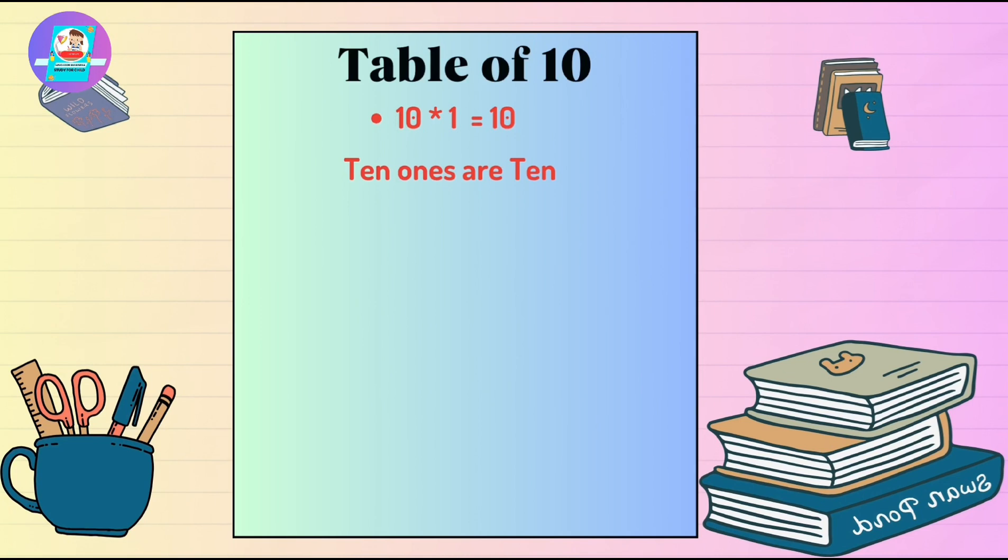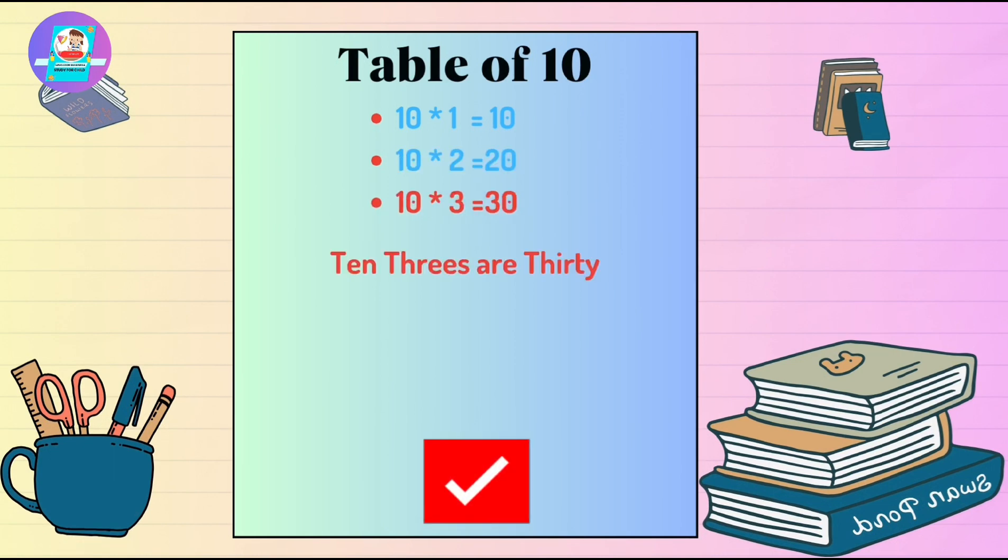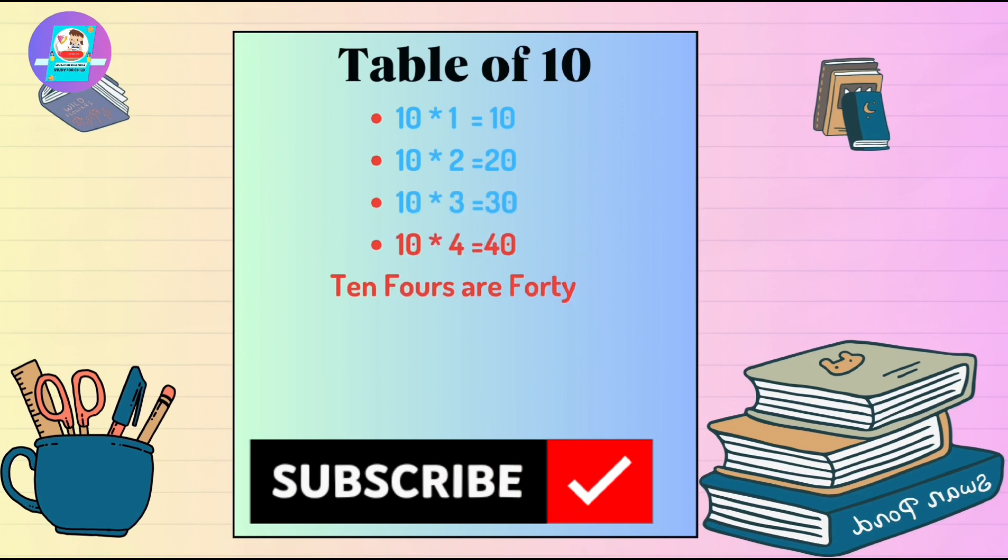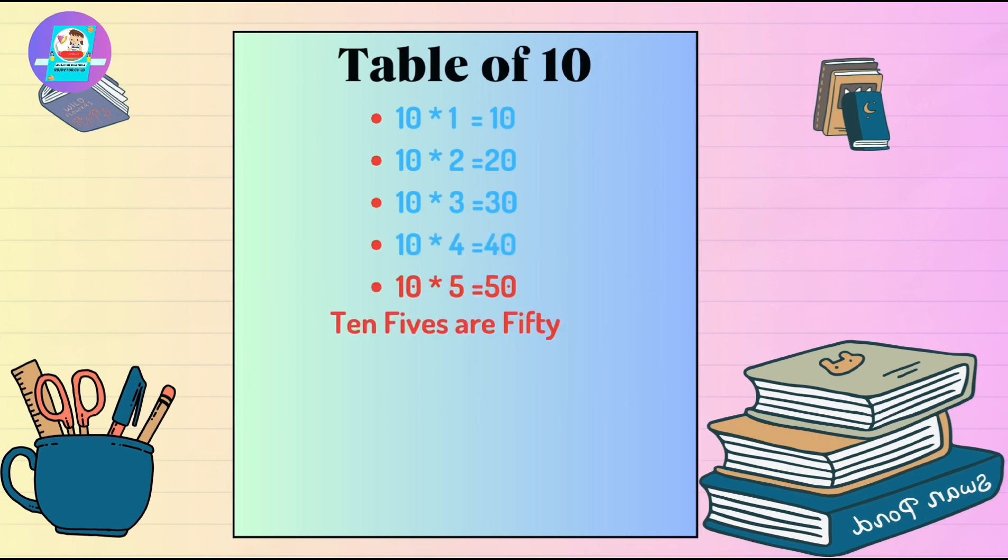Now we will learn table of 10. 10 1's are 10. 10 2's are 20. 10 3's are 30. 10 4's are 40. 10 5's are 50.